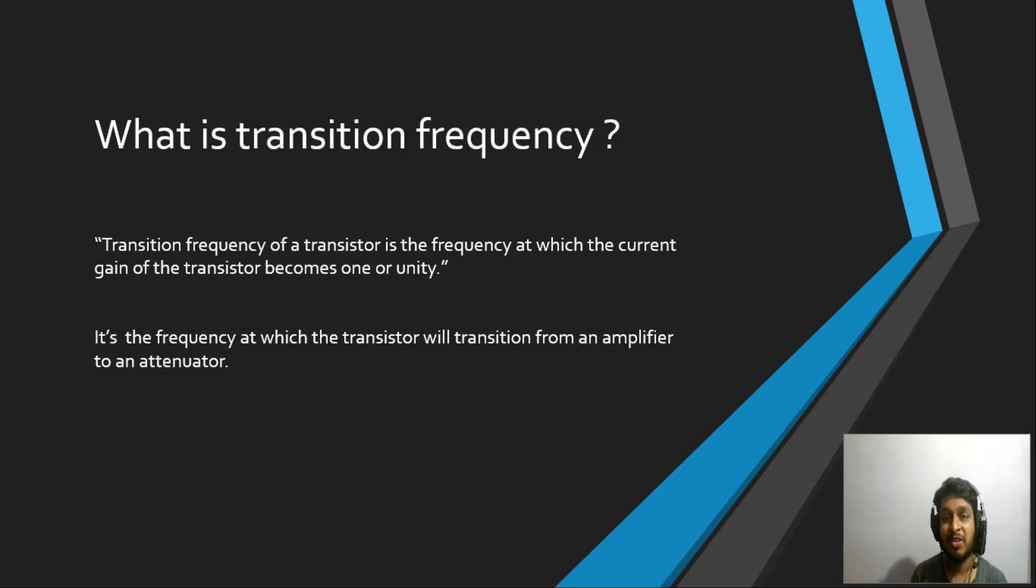Why do we call it transition frequency? Why can't we call it unity gain frequency or something like that? We call it transition frequency because from that frequency, the transistor will act like an attenuator. It will transition from an amplifier to an attenuator. So we can consider this as an upper bound frequency, after which the transistor may not be good enough for our analog design.